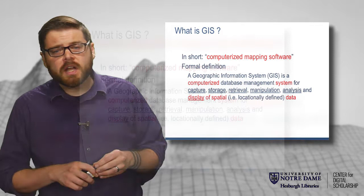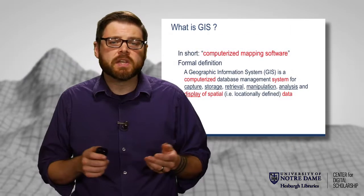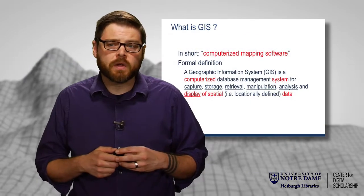GIS is essentially computerized mapping software. It's a suite of tools designed for managing spatial databases — capturing, storing, retrieving, analyzing, manipulating, and displaying spatial data in some sort of computer-based system. That's a really complicated way to essentially say computer mapping software.